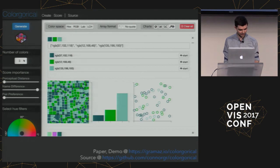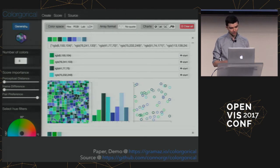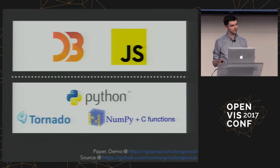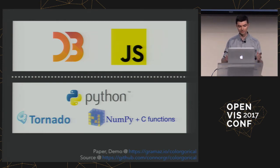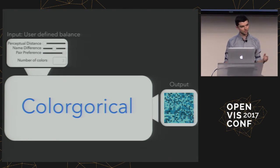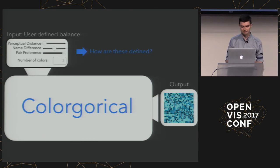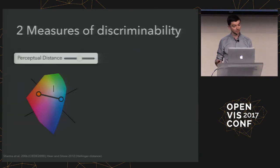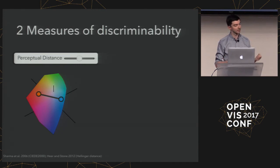Dragging these sliders does result in various palette appearances. The tool boils down to manipulating three sliders and the number of colors. Two of the sliders correspond to discriminability: the first is perceptual distance using CIE lab space with Euclidean distance — how far is point A from point B. Name difference uses research by Jeff Hare and Maureen Stone utilizing XKCD color survey data, with 153 color terms and histograms for color name associations with every perceptual color.